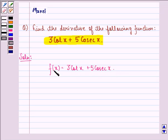So f'(x) will be the derivative of this function plus the derivative of this function. So f'(x) will be equal to 3 times d/dx of cot x plus 5 times d/dx of cosecant x.